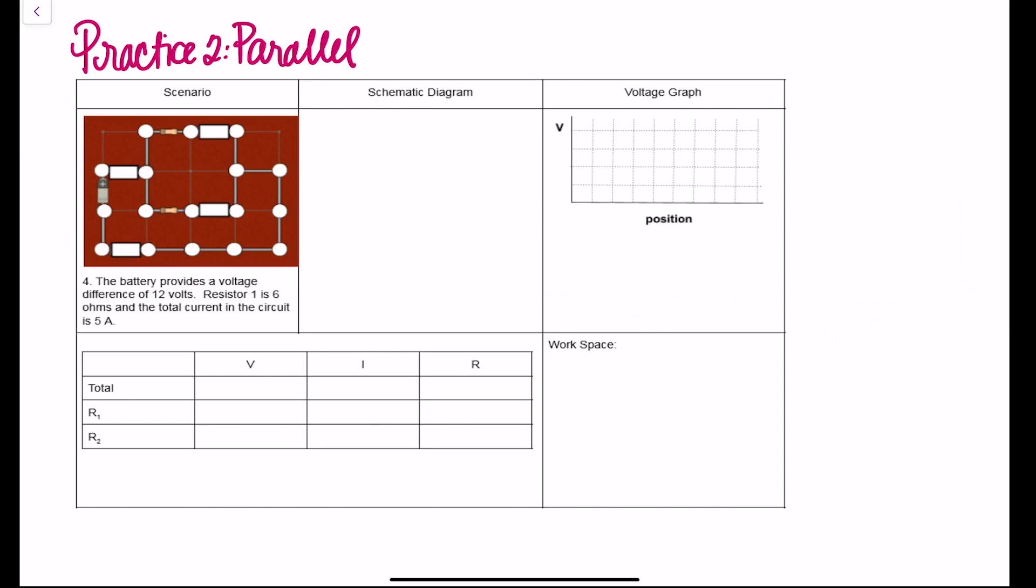Okay, so for parallel practice number four, we have a battery that provides a voltage difference of 12 volts. Resistor one is 6 ohms, and the total current in the circuit is 5 amps. So we know that the total is 5 amps, we know that it's 12 volts, and that resistor one has 6 ohms, so this is going to be 6 ohms.